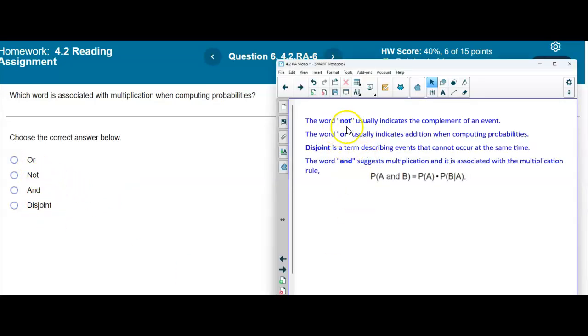Now the word not usually indicates the complement of an event. The word or usually indicates addition when computing probabilities. Disjoint is a term describing events that cannot occur at the same time.